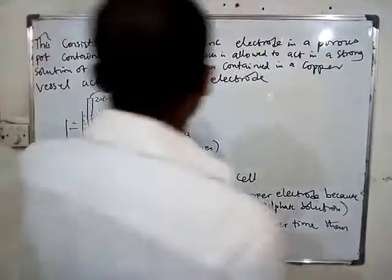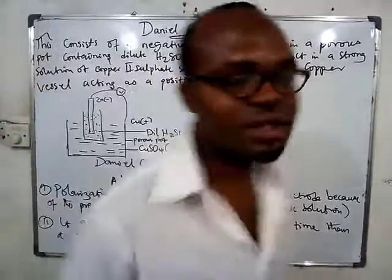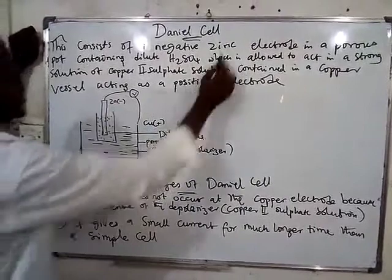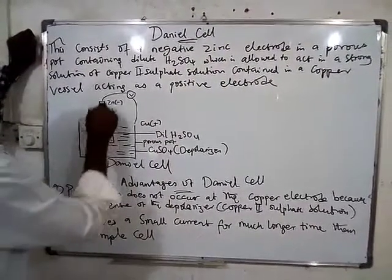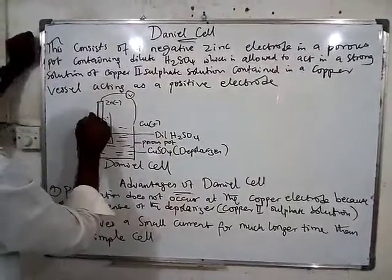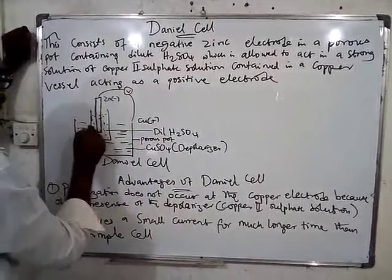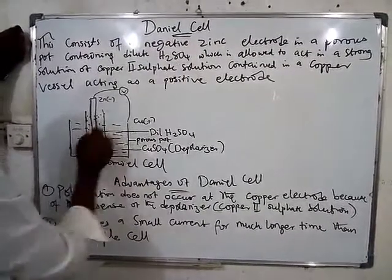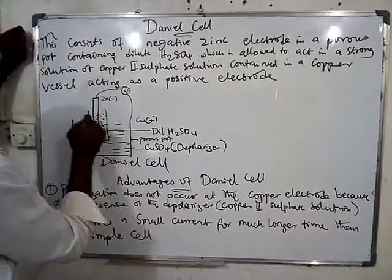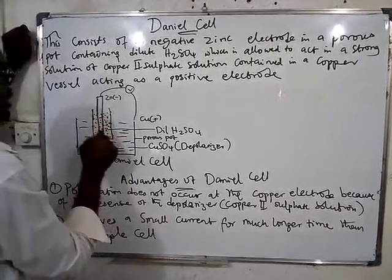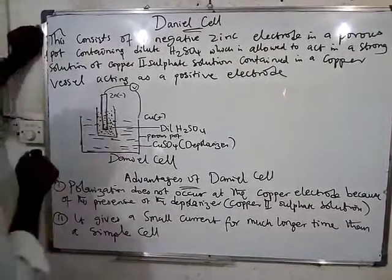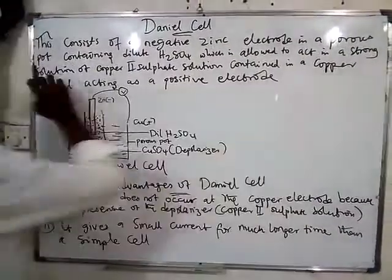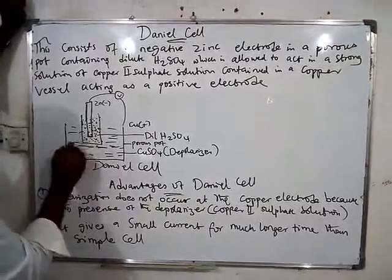So, what is a Daniel cell? The Daniel cell consists of a negative zinc electrode — you can see it here, this is the negative zinc electrode — placed in a porous pot. A porous pot means that substances can enter from outside. Inside the porous pot is dilute sulfuric acid (H₂SO₄). This combination acts within a strong solution of copper(II) sulfate solution.